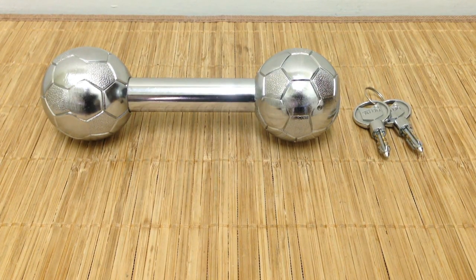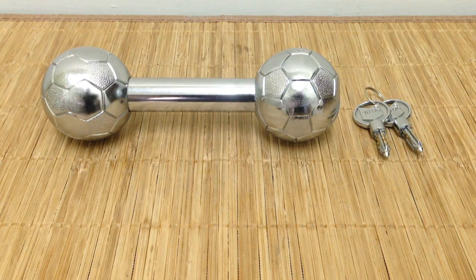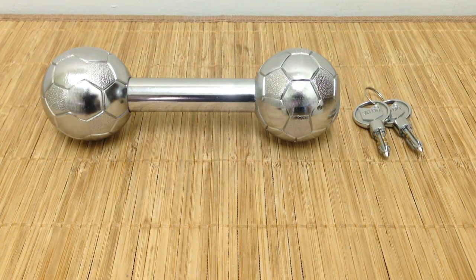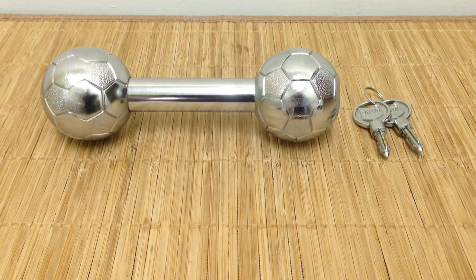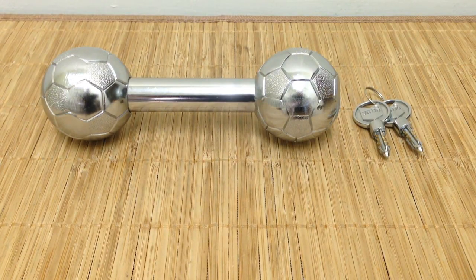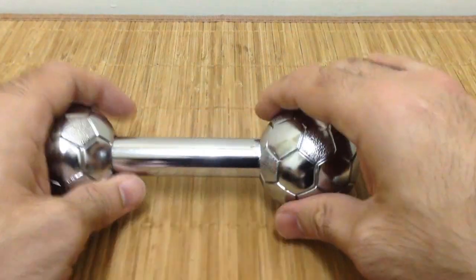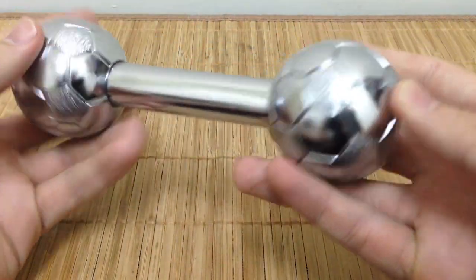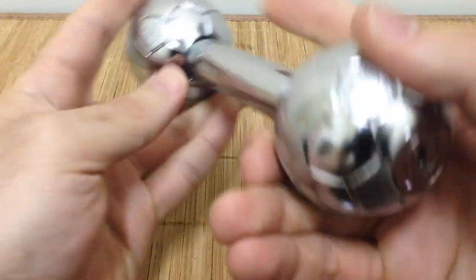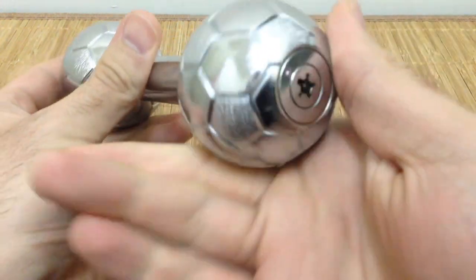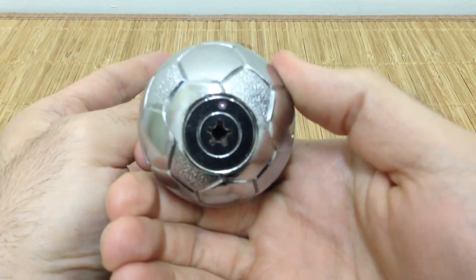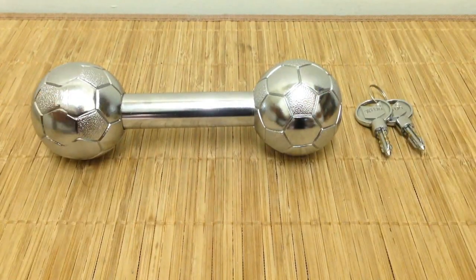It's called a dumbbell lock or a barbell lock for obvious reasons. It's a type of heavy duty, very tough lock to resist physical attacks. This lock has an interesting soccer theme going on, which I enjoy very much. It's also got a cool keyway that I will explain in the next section. Later on, I'll even try to pick it for you.